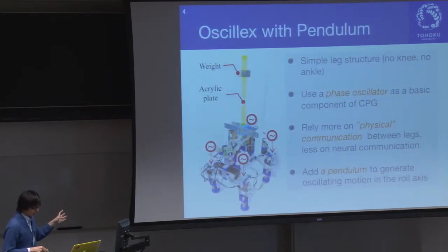This is an overview of our robot. So, to design this robot, we use some simplification. First, we use a simple leg structure. This robot's leg have no knee and no ankle. This is our motivation to understand the interlimb coordination in the quadruped locomotion. Interlimb coordination means the coordination between the leg movements. So, we use this very simple leg structure. And in this robot, we use a phase oscillator as the basic component of CPG. So, this control of this robot based on the central pattern generator. So, we use a very simple phase oscillator to generate a rhythmic leg motion. And the third point, this is a mainly important point of our approach. So, we hypothesize that interlimb coordination in quadruped locomotion should rely more on physical communication between legs through their body dynamics, less for neural communication.